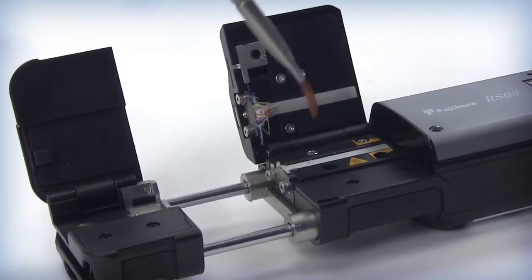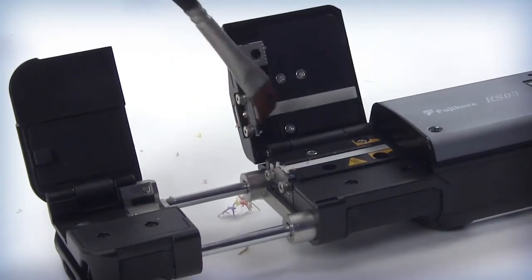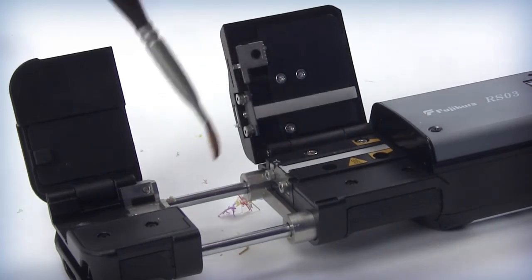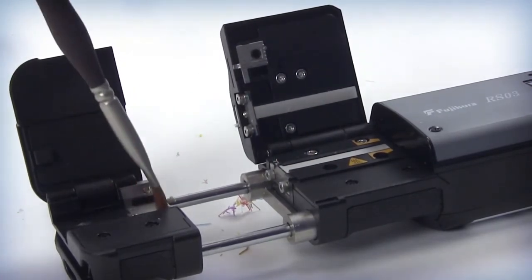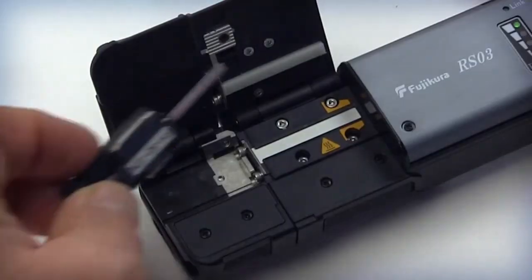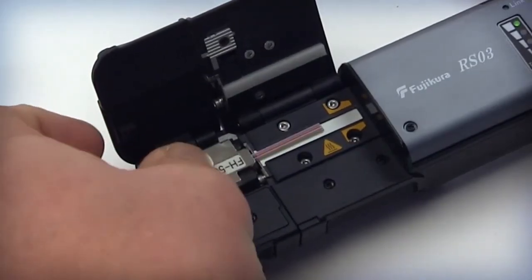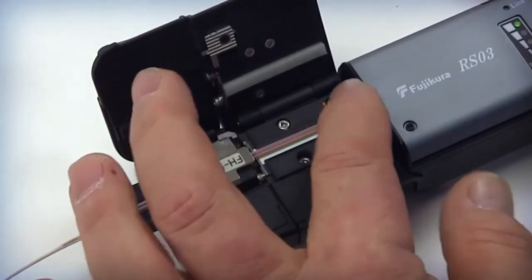Inspect the thermal stripper to be sure it is clean and ready for use. This includes checking the stripping channel, the slide, the blades, as well as the friction pad. Insert the loaded fiber holder into the thermal stripper and ensure it is fully seated.